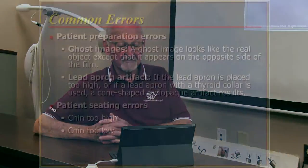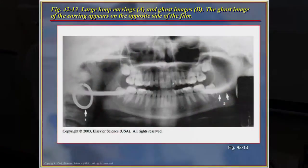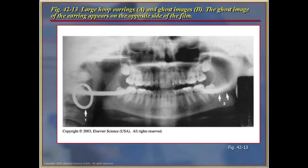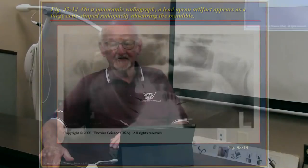Common errors include patient preparation errors, ghost images, lead apron artifacts, and patient seating errors such as the chin being too high or too low. A ghost image appears on the opposite side of the film from the real object. For example, if a patient's earring is left in place, an enlarged ghost image will appear on the opposite side of the head. When taking panoramic or extraoral films, any metal insertions in the patient's ears, nasal area, or tongue must be removed to avoid image distortion.